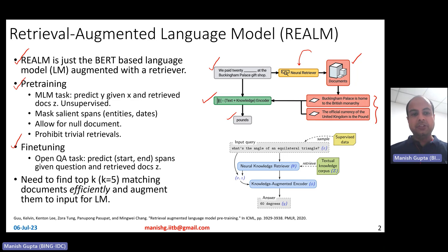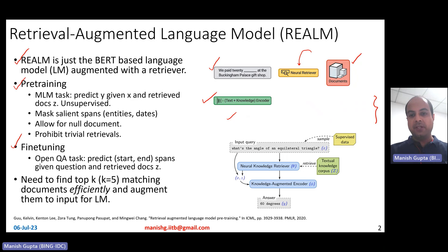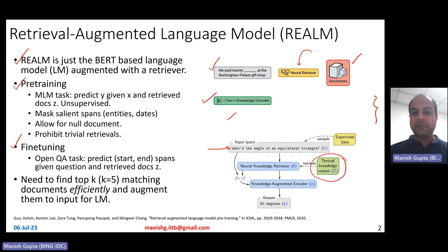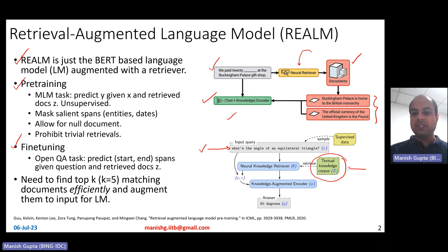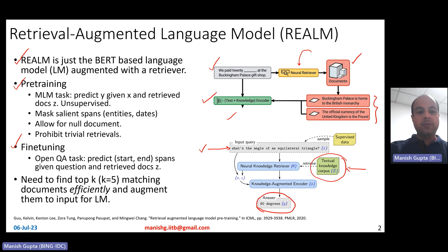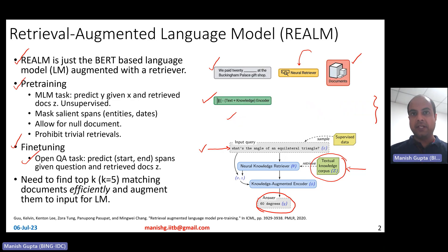At fine-tune time, they fine-tune using an open question answering task. The idea is to be able to answer questions like 'what's the angle of an equilateral triangle,' not just based on the memory the model has in its weights, but also by making use of this extra knowledge corpus. At fine-tune time, you basically take the input question, go to the knowledge corpus, figure out the top K related documents, augment them and give them as input to your BERT model, and hope that the BERT model will come up with the right answer. You essentially try to predict the start and end spans, given the question and the retrieved document Z.